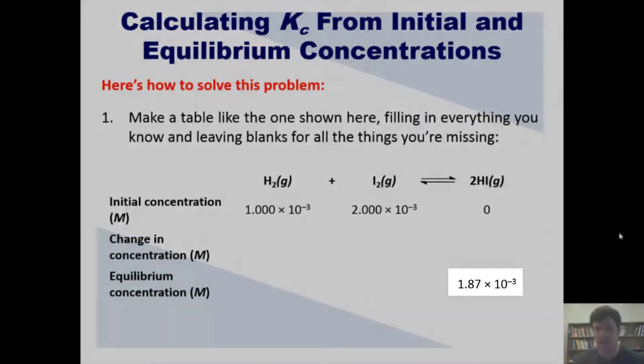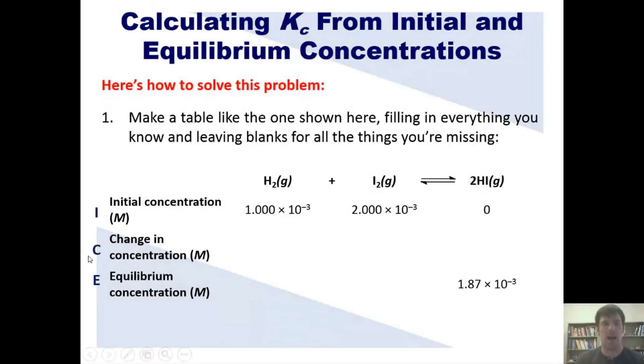It then also tells us that the final equilibrium concentration of the product is this. This kind of table, by the way, is called an ICE table. ICE is an abbreviation for initial, change, and equilibrium. That's hopefully easy to remember.